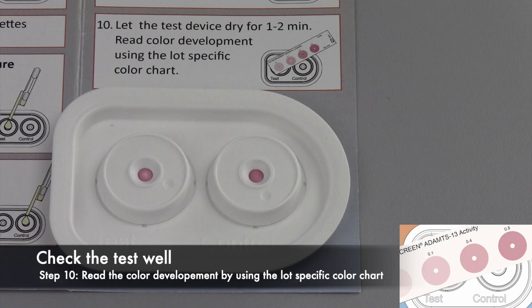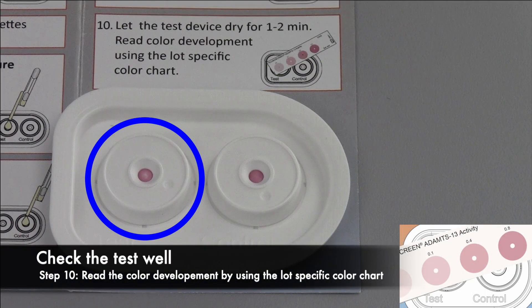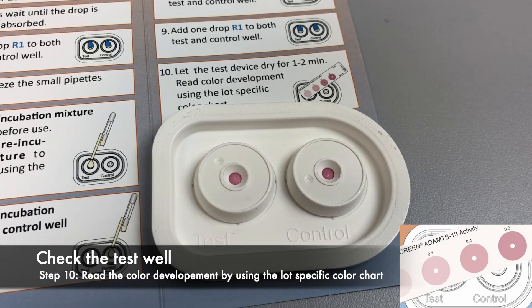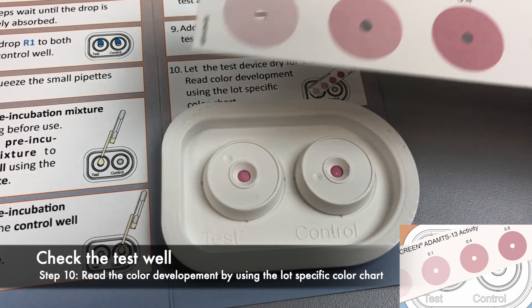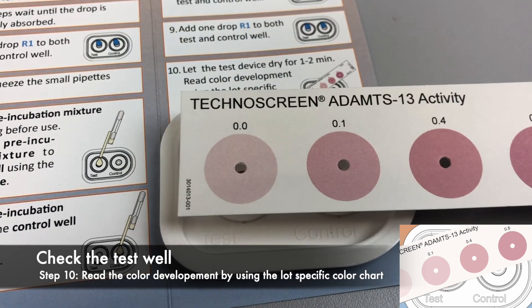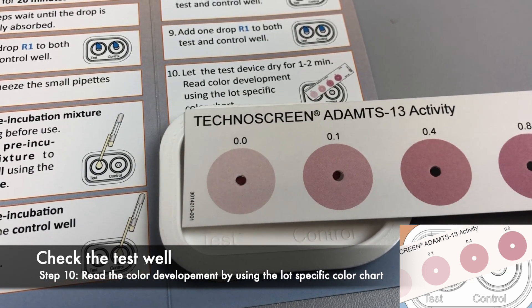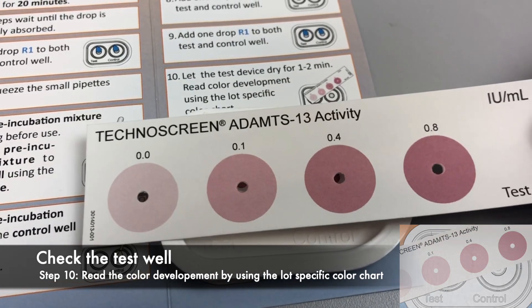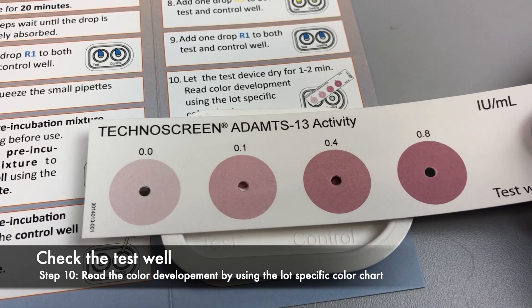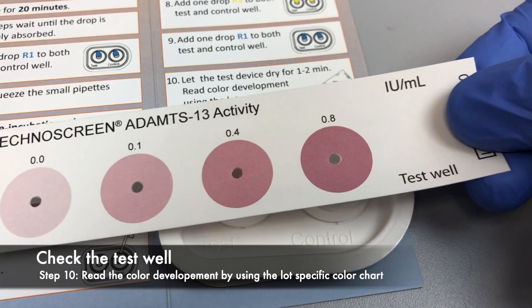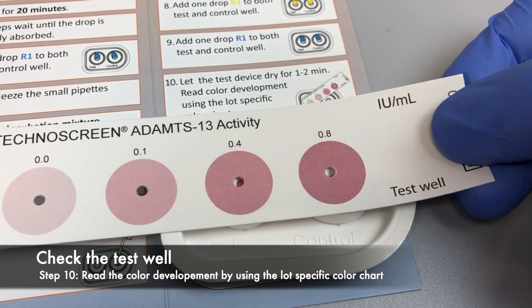Then the color development of the test well is analyzed. Use the flip side of the color chart and select the color closest to the test well. The results are given in international units per milliliter.